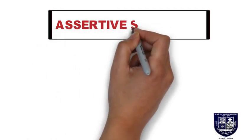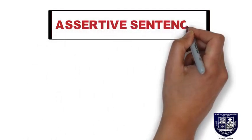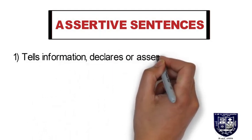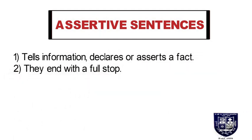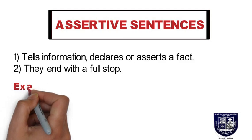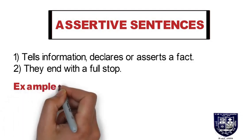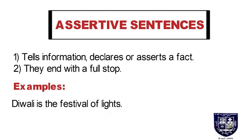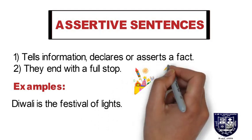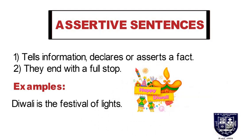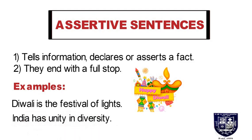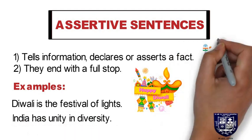Let us see the first one — the assertive sentence. An assertive sentence tells us information, declares or asserts a fact, and ends with a full stop. For example, 'Diwali is the festival of lights.' This statement gives us the information that Diwali is a festival of lights.